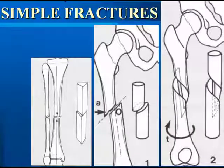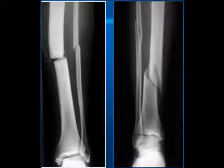As for the classification in terms of the fracture line, they can be simple or complex. Simple fractures include transverse, oblique, and spiral fractures. As for complex fractures, there can be wedge fragments, comminuted fractures (which are more than three fragments), and segmental, burst, or irregular fractures.